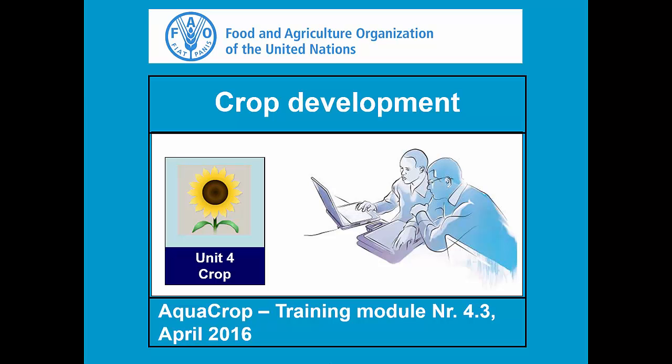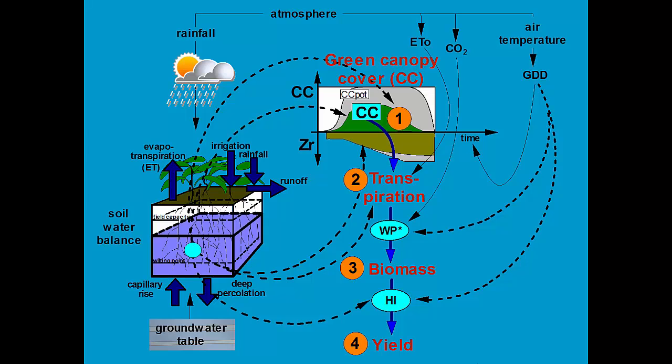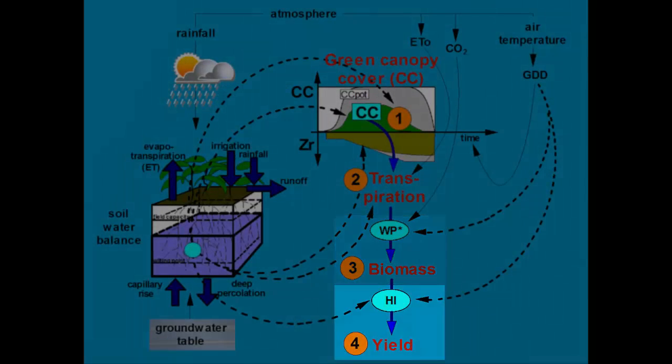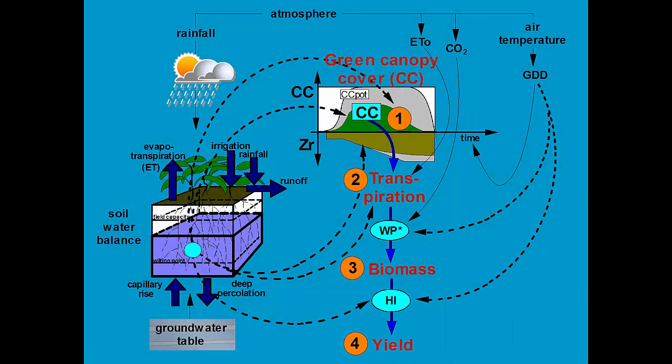Training Module 4.3: Crop Development. This slide gives a schematic overview of the calculation scheme of AquaCrop. Crop yield is simulated in four steps: Step 1, Green canopy cover; Step 2, Crop transpiration; Step 3, Biomass production; Step 4, Crop yield. Each of those processes can be affected by water stress and temperature stress. In a series of four training modules, we are going to focus on each process individually.